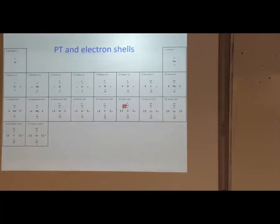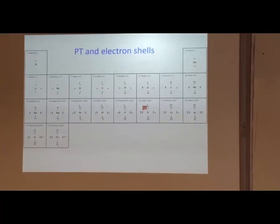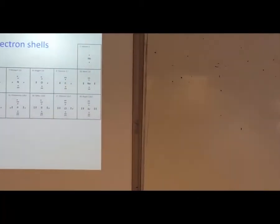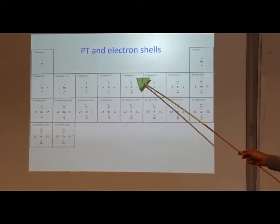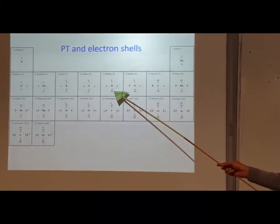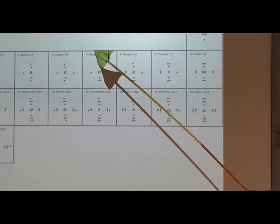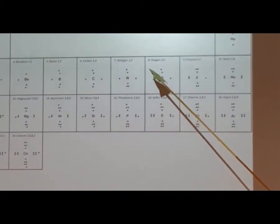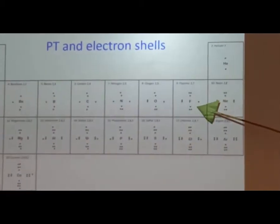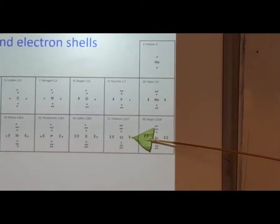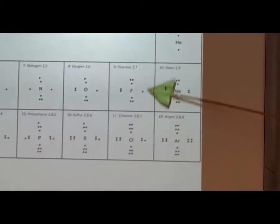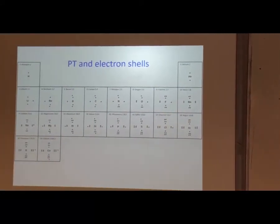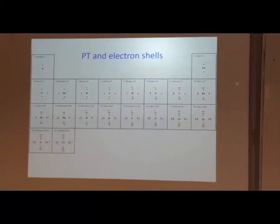Here are the electron shells. This is how you work out what sort of ion is going to form, and this gives you a model to explain things, because this model is wrong but it's a lot easier than SPDs. We use this to explain everything because it's simpler. Just be aware: missing one electron means it wants to gain one, so it becomes negative one, negative two, plus one, plus two. The rest in between can get complicated.